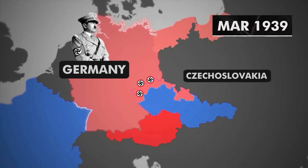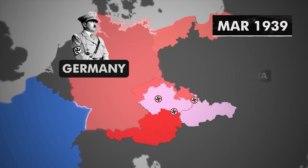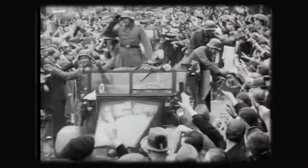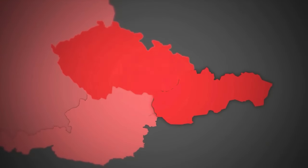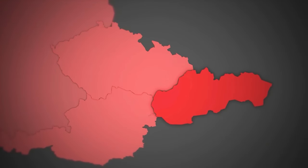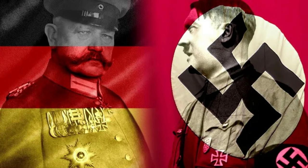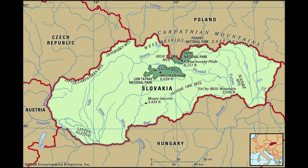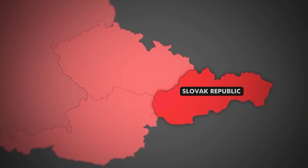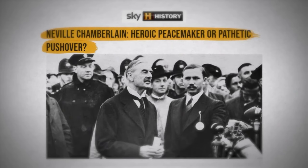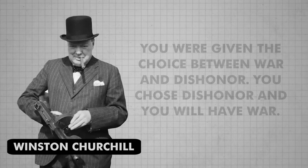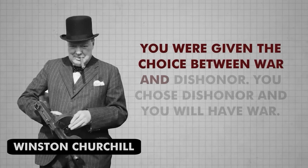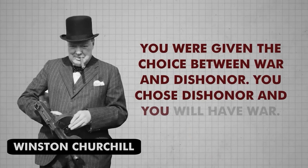In March 1939, Hitler took his army to invade the rest of Czechoslovakia. People fought for the first time, but the German army won easily and the country was split into two. One part was included in German territory and the second part was made a Nazi client state, a puppet government placed under the name of the Slovak Republic. British Prime Minister Chamberlain faced heavy criticism. At this point, Winston Churchill famously said: 'You were given the choice between war and dishonor. You chose dishonor and you will have war.'